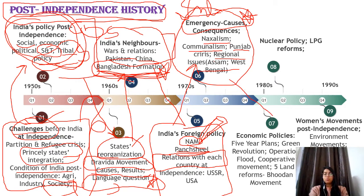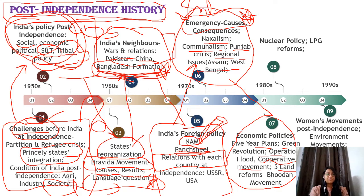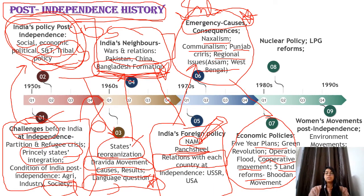Then you will move to the economic policy of India — Five Year Plans, the Planning Commission, Green Revolution, Operation Flood, the Cooperative Movement, and how Amul cooperative was established. Land reforms that India introduced at that time — the five types of land reforms India introduced — what were they, what was their success rate, their achievements, their consequences. The Bhoodan Movement is also important and will be covered here.